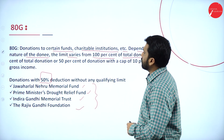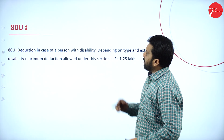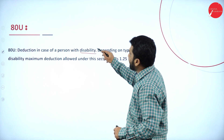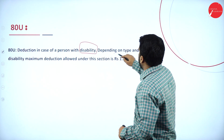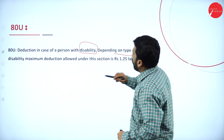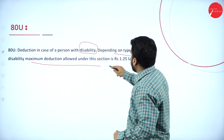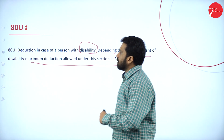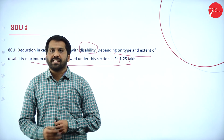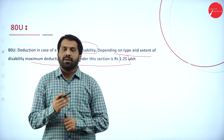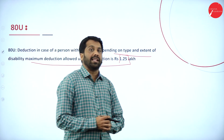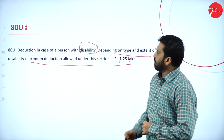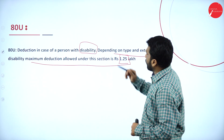Section 80U is deduction in case of a person with disability. The maximum deduction depends on the type and extent of disability, and the maximum deduction is one lakh twenty-five thousand. If you yourself are disabled, whatever income you get, up to one lakh twenty-five thousand spent on that will be taken as deduction.